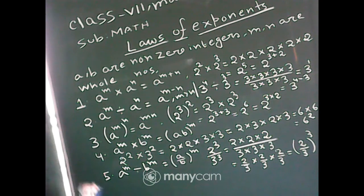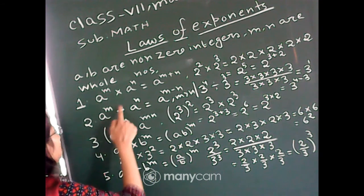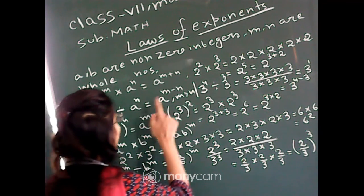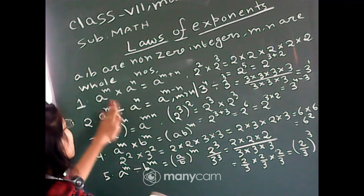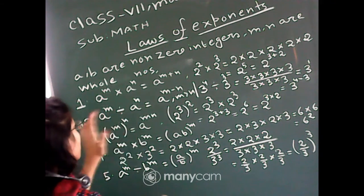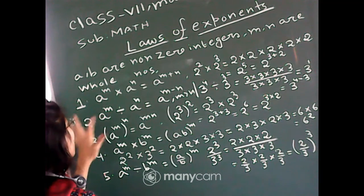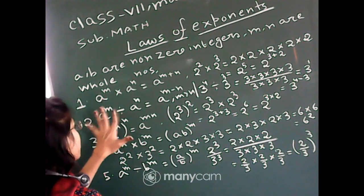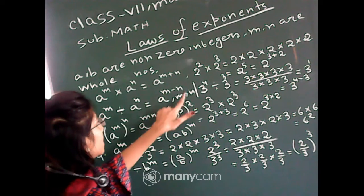The next rule is: a to the power m divided by a to the power n is equal to a to the power m minus n. This is called dividing powers with the same base. Here the powers are different but the bases are same, and m must be greater than n.